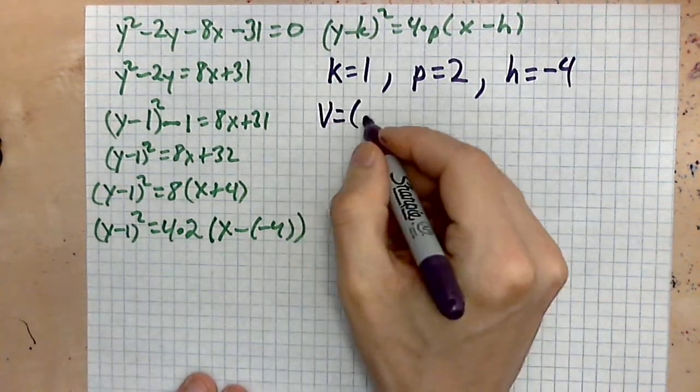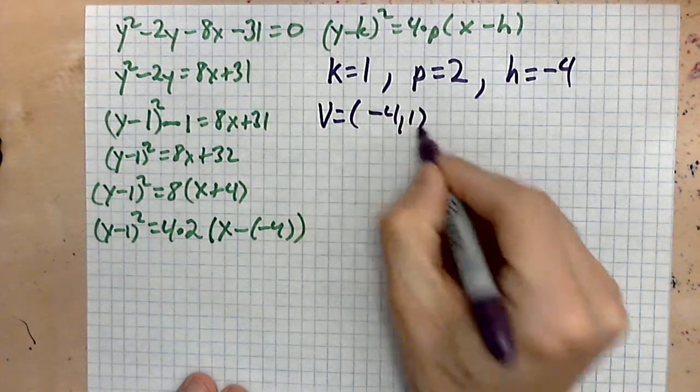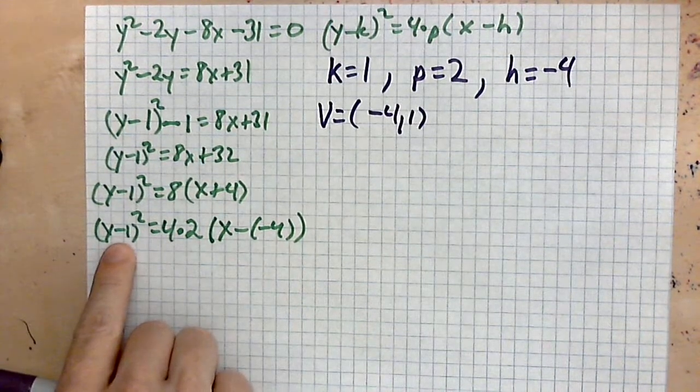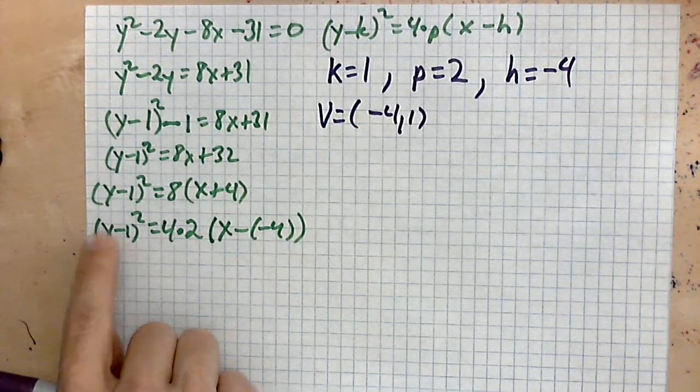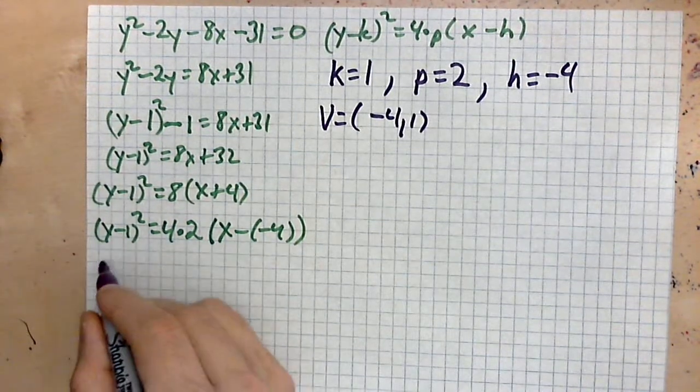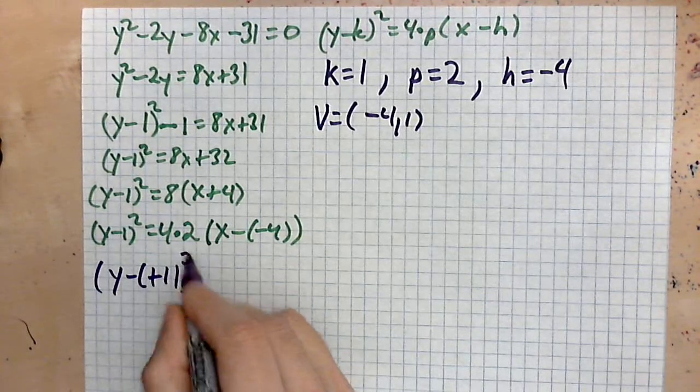a point, and it will be found as negative four comma one. So negative four is this portion, and the one is from here. Do not take negative one here. You've got to see this as y minus a positive one. You've got to learn to see it that way.